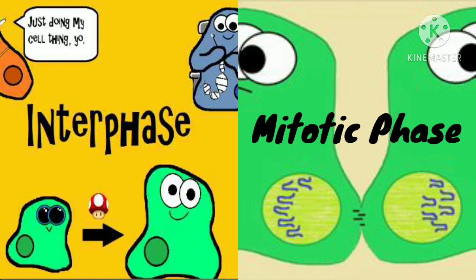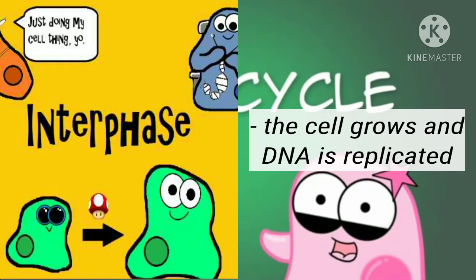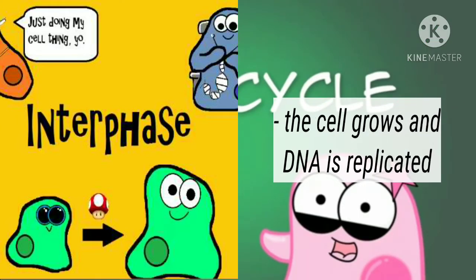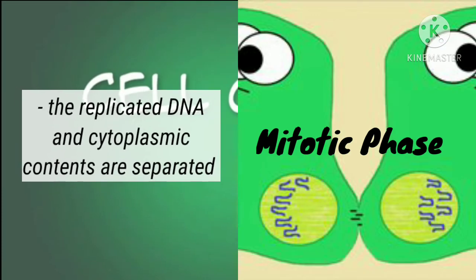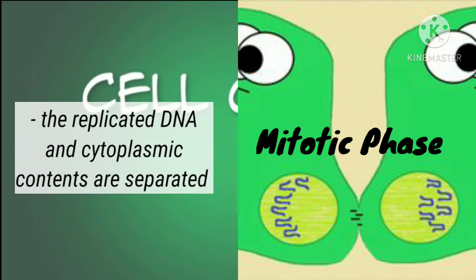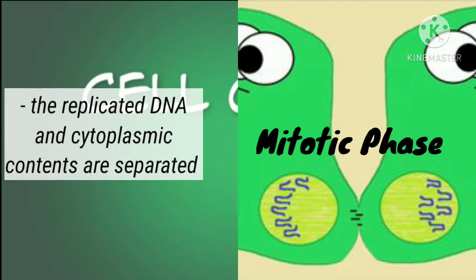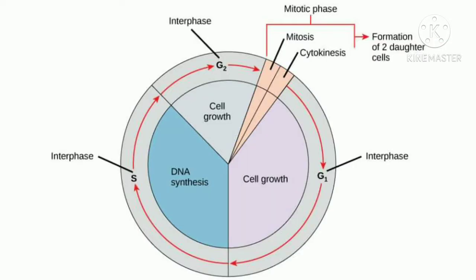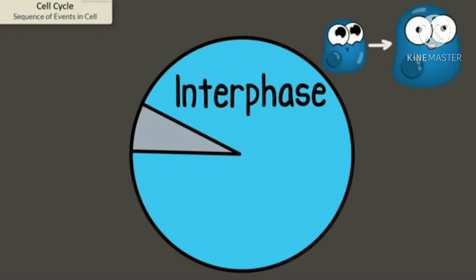The cell cycle has two major phases: interphase and the mitotic phase. During interphase, the cell grows and DNA is replicated. During the mitotic phase, the replicated DNA and cytoplasmic contents are separated and the cell divides.